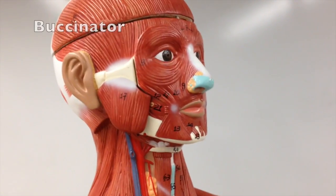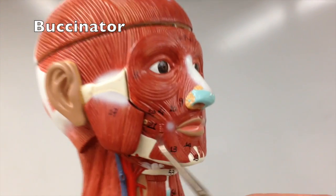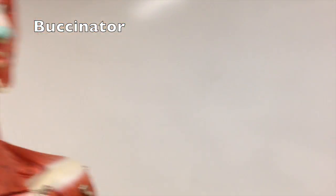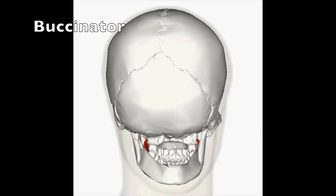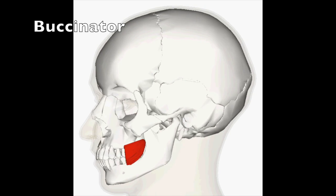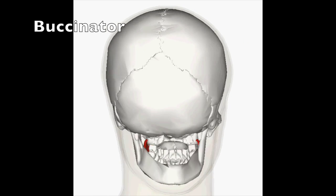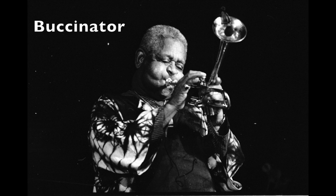A muscle in the walls of the mouth called the buccinator pulls the cheeks inward and aids in keeping food in contact with the teeth. It has origins on the maxilla and the mandible, and it inserts on the orbicularis oris muscles that surround the mouth. Because this muscle also aids in blowing air out of the mouth, it's sometimes referred to as the trumpeter muscle.